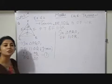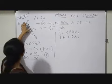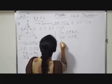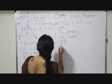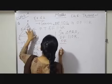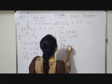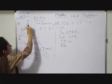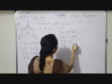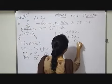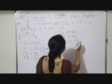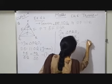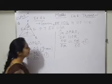So based on the Basic Proportionality Theorem, I can write: PF upon FR equals PD upon DO. Let this be equation number 2.